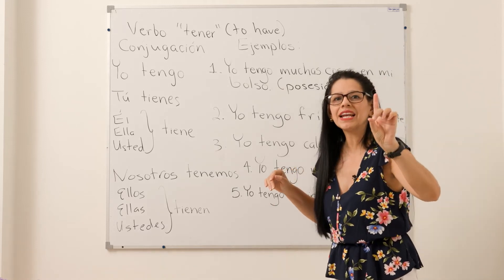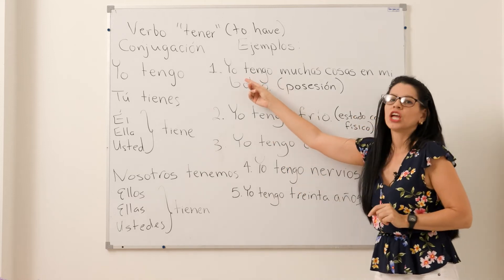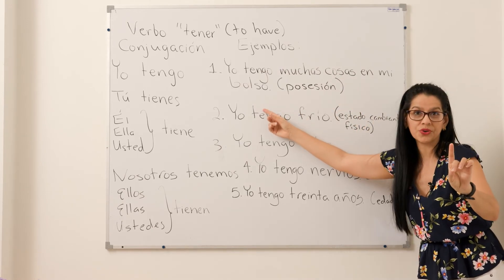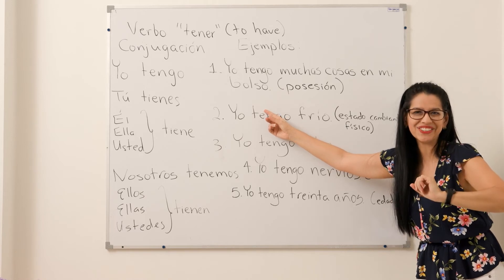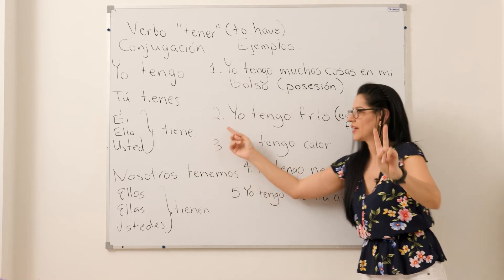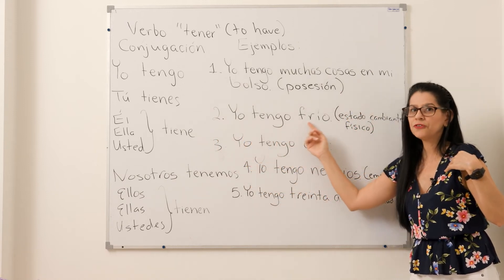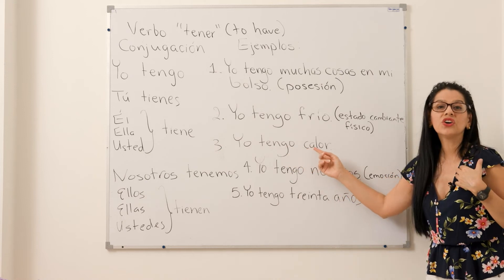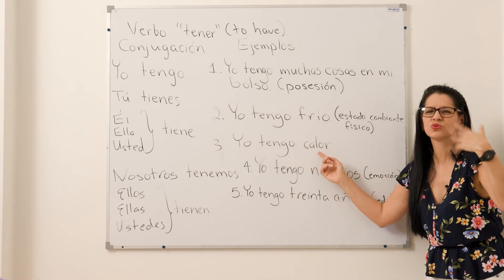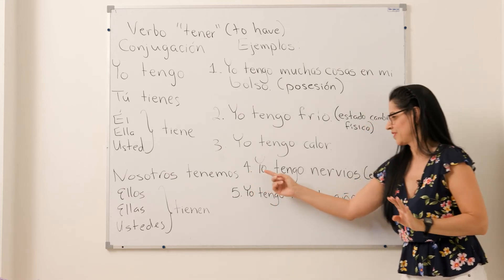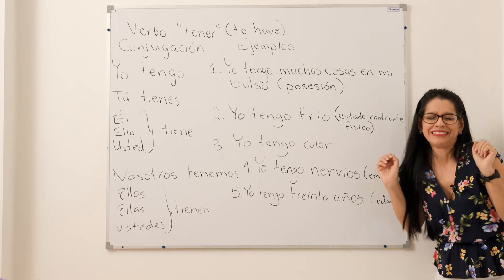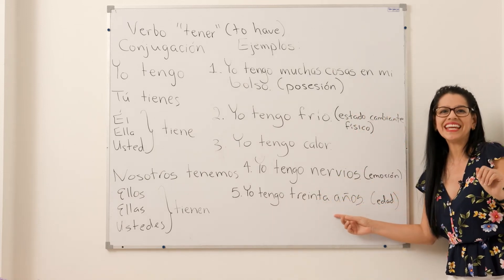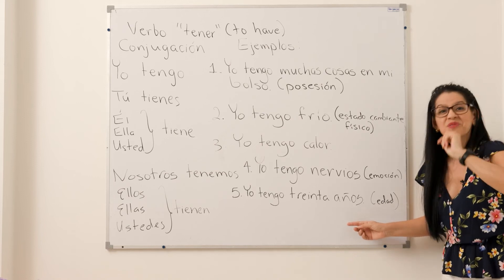Vamos a practicar la pronunciación. Número uno: Yo tengo muchas cosas en mi bolso. ¿Estás repitiendo? Excelente. Número dos: Yo tengo frío. Excelente. Número tres: Yo tengo calor. Muy bien. Número cuatro: Yo tengo nervios. Y número cinco: Yo tengo treinta años. Repita. Muy bien, excelente.